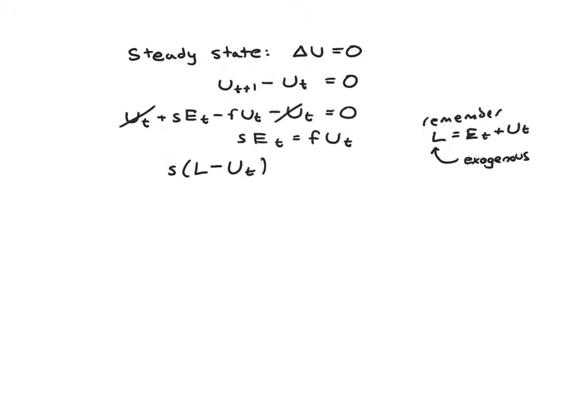Let's try replacing e here with L minus u_t. Now we have a bunch of exogenous variables s, f, and L, and one endogenous variable u_t. So we can try to simplify and write this as u_t equals something. If you do that, you will get u_t equals s/(s+f) times L. This is the equation we were hoping to get - this characterizes our steady state.